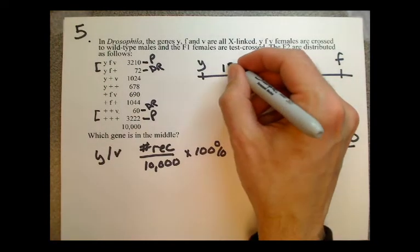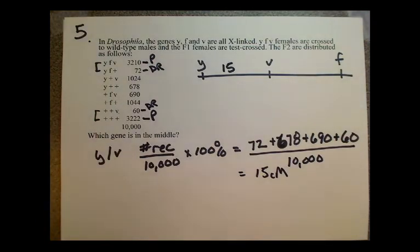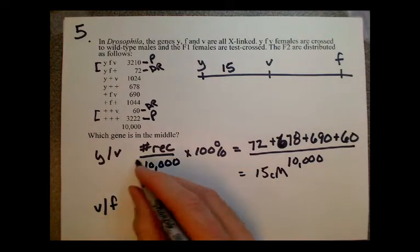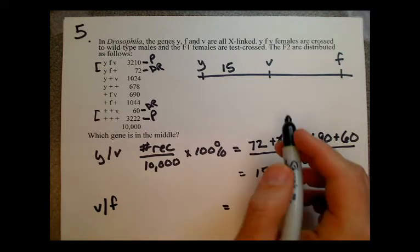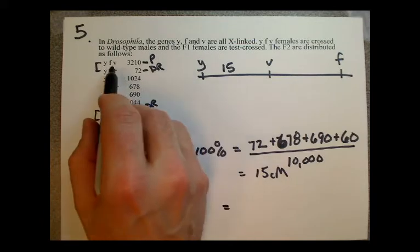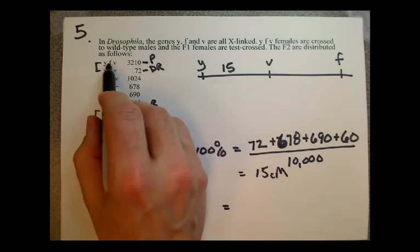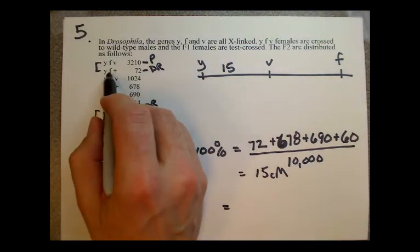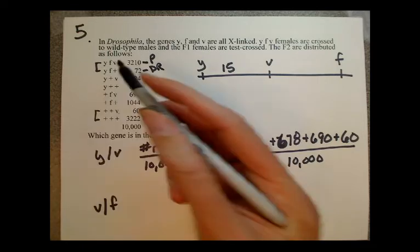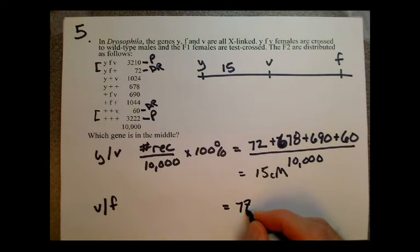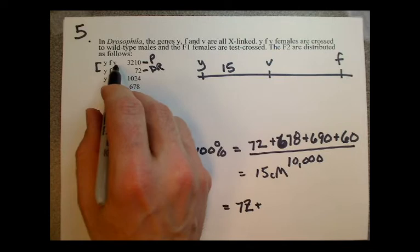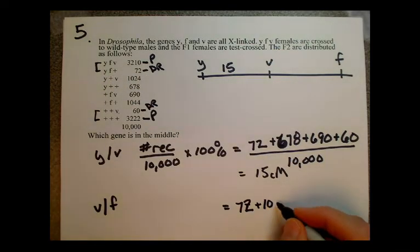So this distance would be 15. Now for the other distance, if we want to go between V and F, we have the same formula. We just need to look for the recombinants between V and F. In the parentals, V and F start out as either both mutant or both wild type. The double recombinants here show a recombination event, so we add those: 72. Here we've had a recombination event — we start out both mutant, end up one mutant and one wild type, so plus 1024.